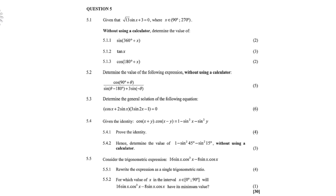5.4: given the identity cos(x + y) · cos(x − y) = 1 − sin²x − sin²y. Remember, if you have to prove an identity, you need to prove the left-hand side equals the right-hand side. Then 5.4.2: hence — remember, 'hence' means use the previous — determine the value of 1 − sin²45 − sin²15, again without using a calculator.